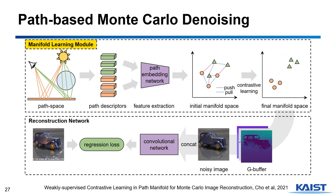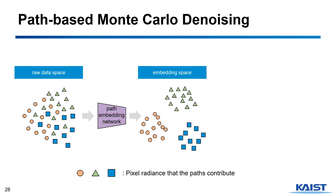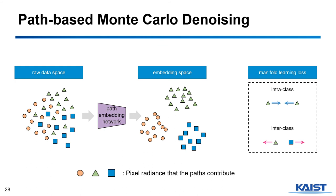Beyond using sample features, this recent work utilizes path features to provide richer information for denoising. The manifold learning module embeds the path features into a lower-dimensional space for efficient denoising using contrastive learning. Contrastive learning is a deep learning method that helps repel non-correlated features while attracting similar and highly correlated features. This work uses this method to embed similar path features closely while repelling the embeddings of paths that are not correlated. The correlation is determined by pixel radiance, so paths that contribute to similar pixel radiance are embedded similarly while others are embedded contrastively.